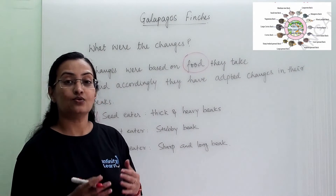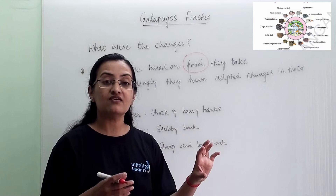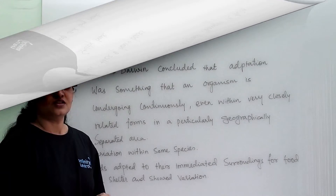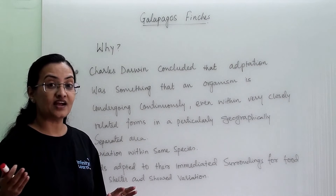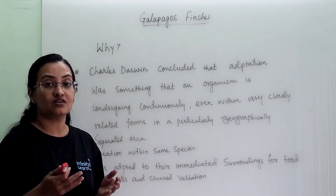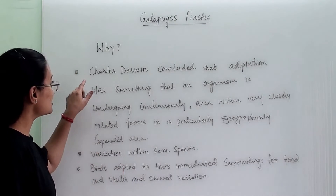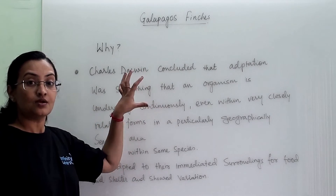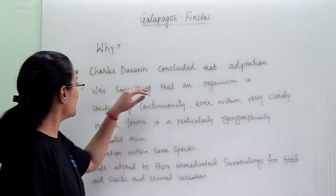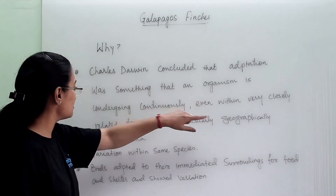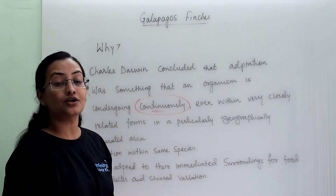Now we will discuss why the finches adapted all these changes and why, within one particular species, they have adapted different food needs. These are the reasons behind the same species showing so many adaptations — the finches were becoming almost different from each other in beak structure and food needs. Charles Darwin concluded, based on what he saw on Galapagos Island, that adaptation is something an organism undergoes continuously.